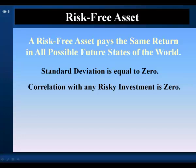We've only considered a universe of risky assets and portfolios of risky assets. Now let's introduce a risk-free asset into the universe and the possibility to lend and borrow the risk-free asset into the market. The risk-free asset pays the same return in all possible future states of the world. Its standard deviation is zero, so its probability distribution is a spike at the risk-free rate. It has no dispersion. Its correlation with any risky investment is zero.